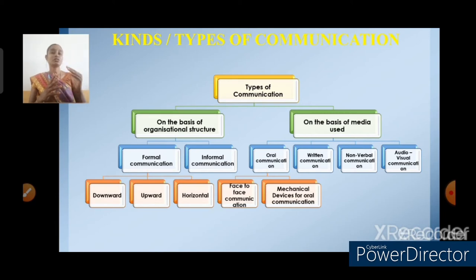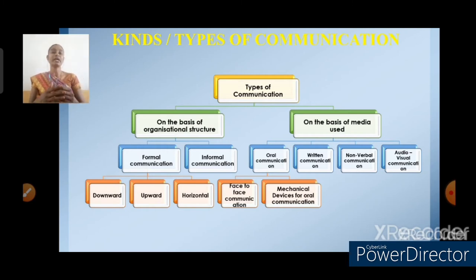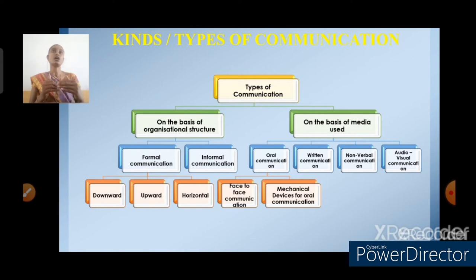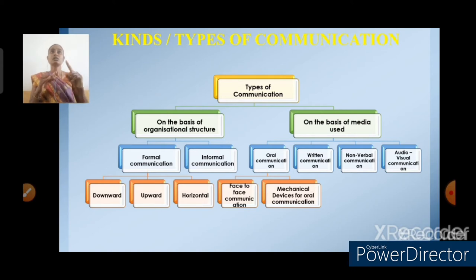Then next, media used. The types are oral communication, written communication, nonverbal communication, and audio-visual communication. Oral communication is further divided into face-to-face communication and mechanical devices for oral communication. Face-to-face communication takes place between two individuals or among small groups. For example, meetings, conferences, and interviews. Mechanical devices for oral communication include signals, telephone calls, dictating machines, and speaking tubes.